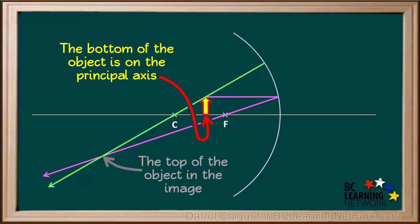The bottom of our object is sitting on the principal axis. So the bottom of the object in the image will touch the principal axis here, directly above the point where the top of the object appears in the image.